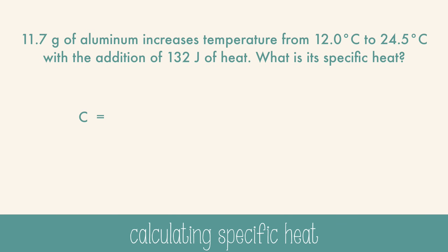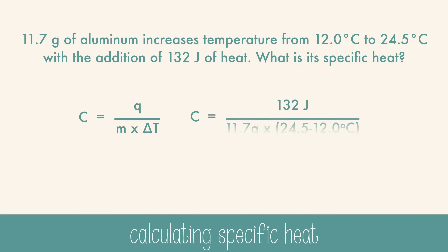Specific heat is equal to the heat divided by mass and change in temperature. So we can plug in our data, making sure to subtract the initial temperature from the final temperature, and we'll get C is equal to 0.90 joules per gram degrees Celsius for aluminum.